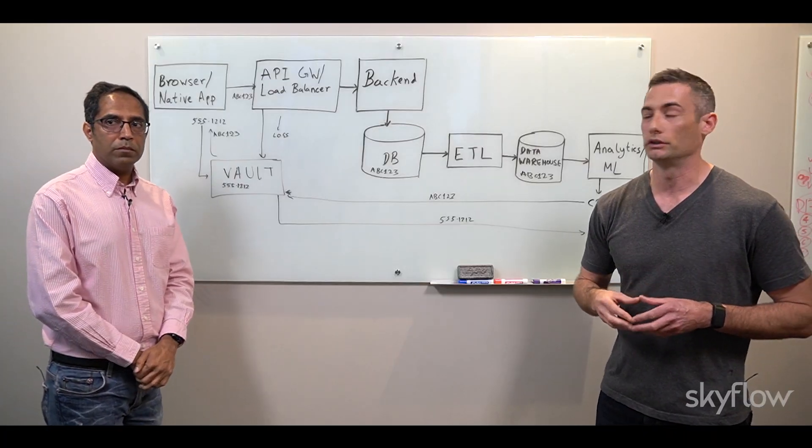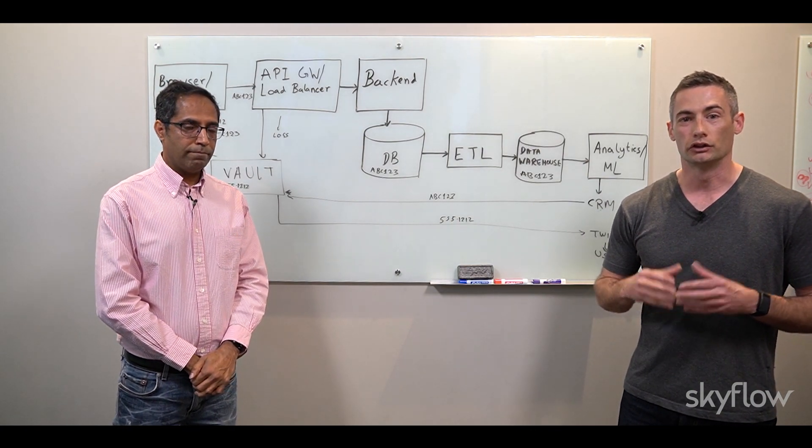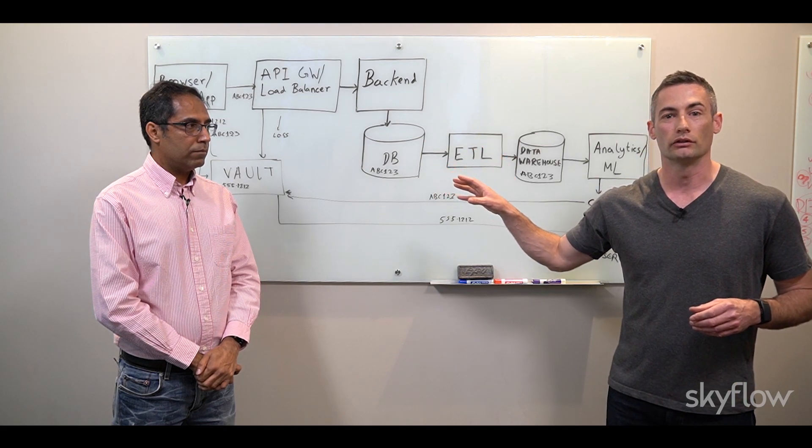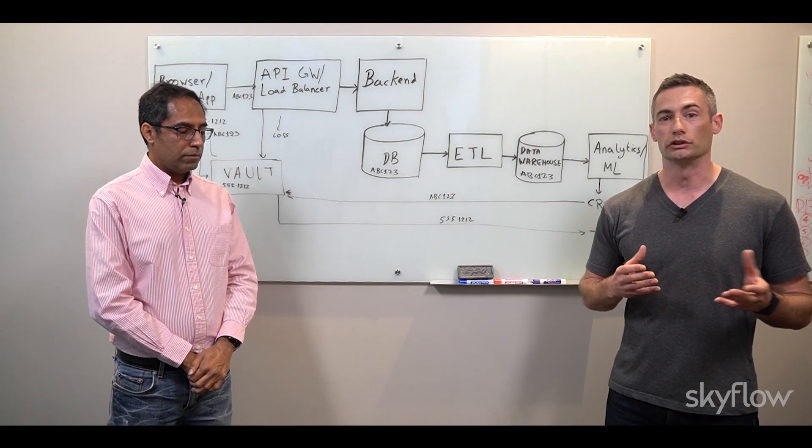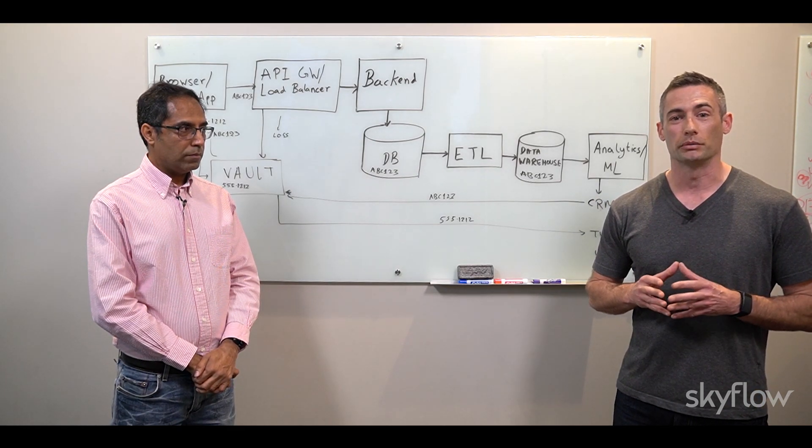Right, okay so essentially with this whole infrastructure the approach that we're taking is isolating and protecting the data, at least the sensitive data, inside the data privacy vault and then we're tokenizing as early as possible and de-tokenizing as late as possible. Exactly. Got it. All right, well thank you so much Manish for talking about some of the challenges that companies face when it comes to securing customer data and how to use a data privacy vault to actually address those challenges. If you want to learn more about data privacy vaults and Skyflow you can check us out at skyflow.com and thank you very much for watching. Remember, move fast but don't break privacy.